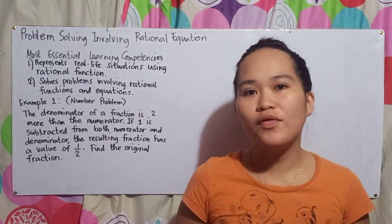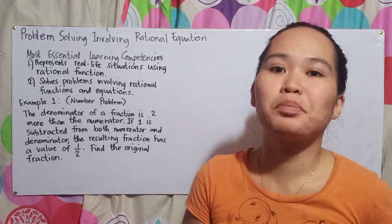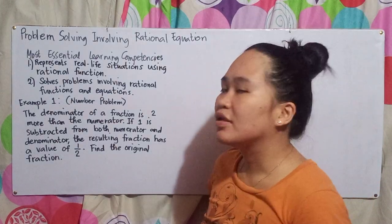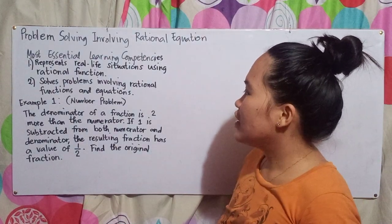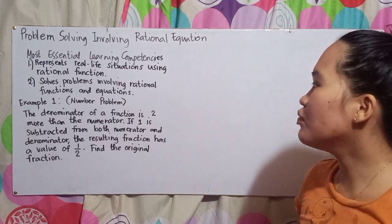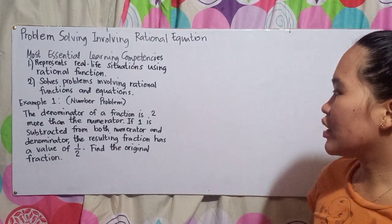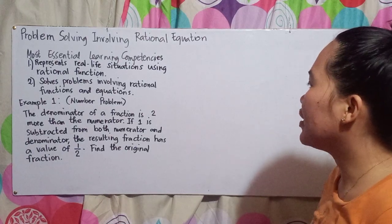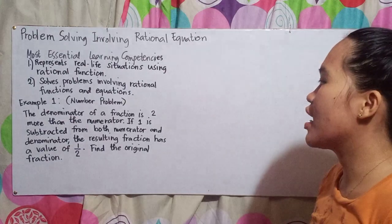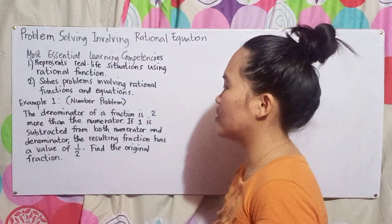Example 1 is a number problem — it involves numbers. The problem is: the denominator of a fraction is two more than the numerator. If one is subtracted from both numerator and denominator, the resulting fraction has a value of one-half. Find the original fraction.